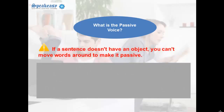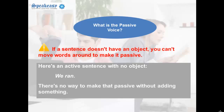If a sentence doesn't have an object, you can't move words around to make it passive. Here's an active sentence with no object: "We ran." There's no way to make that passive without adding something.